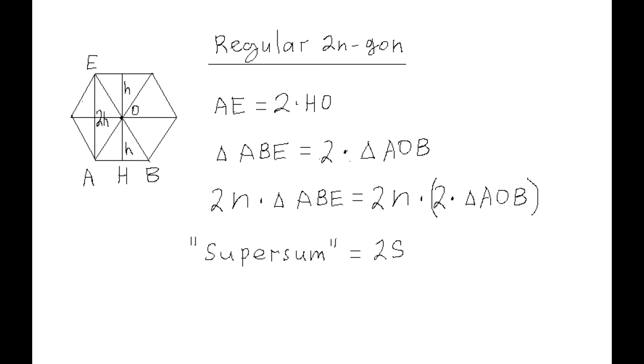From this, it follows that the sum of the assigned areas of sides of this polygon equals 2 times the area of the polygon S. Notice that the super-triangle ABE is formed by a side of the polygon AB and a diagonal that goes through one of its two ends, in this case B, that divides the polygon into two polygons with equal numbers of sides, N.